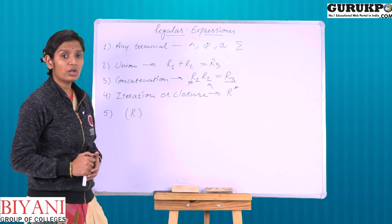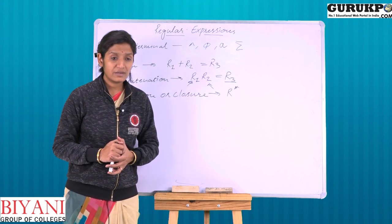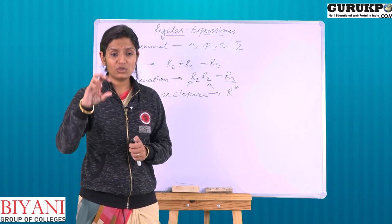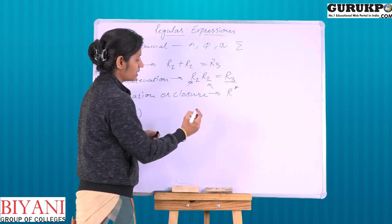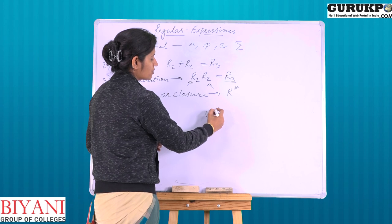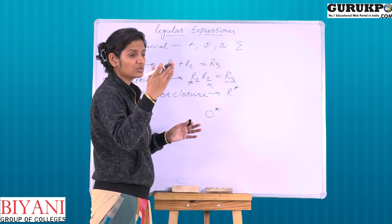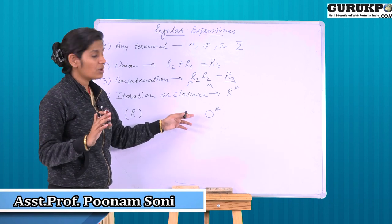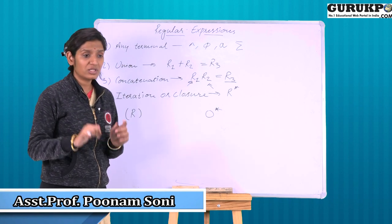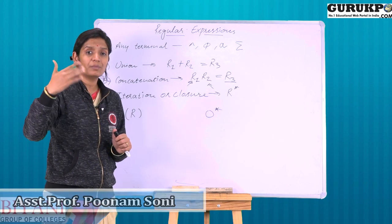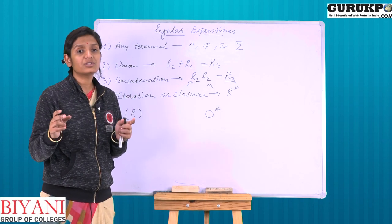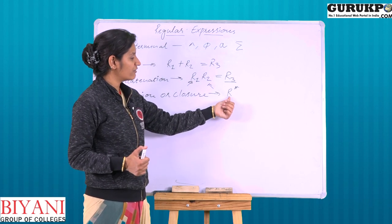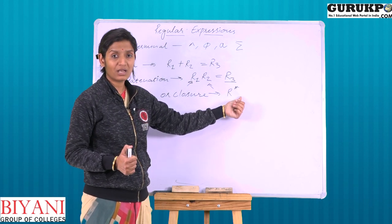Next, we come to iteration and closure property. Iteration means that if we repeat a regular expression — suppose '0' is a regular expression and we repeat it many times, up to n times — then that repetition will also be regular, and we depict it with the star operator.